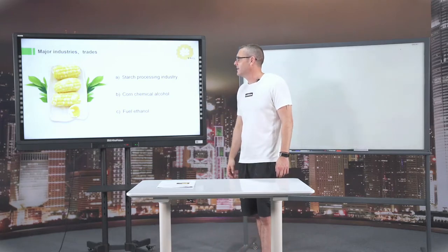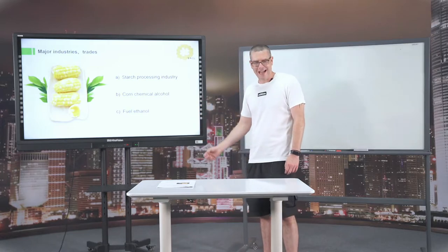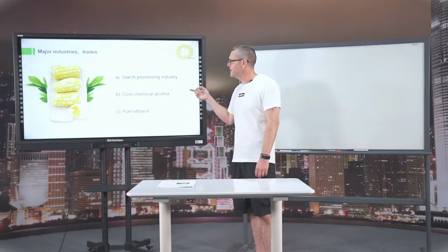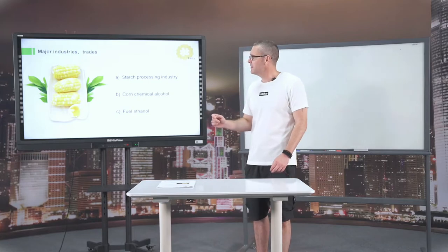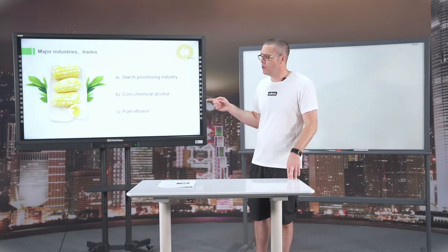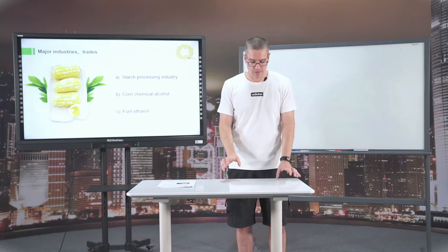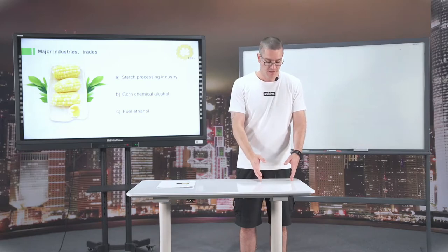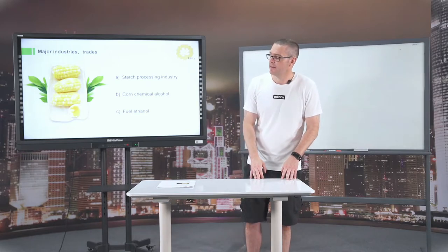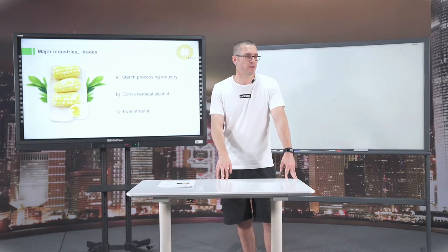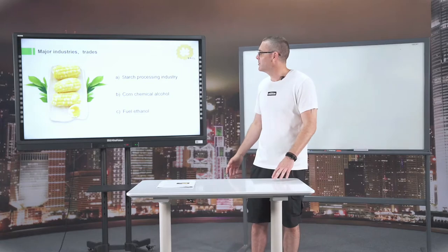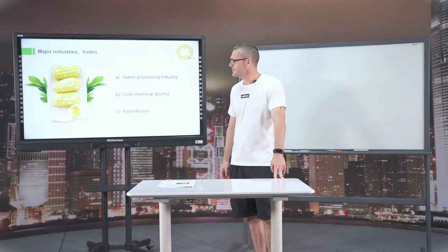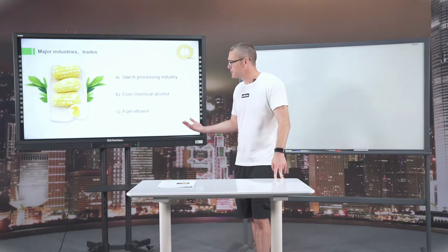Starching process: corn, chemical, alcohol, fuel, ethanol. These are different industries. With alcohol, we break it down into two different parts. Pure alcohol, we cannot drink. Pure alcohol is used in hospitals, cleaning products, because it's so strong and it will kill all the bad things. Fuel ethanol means we can use it for power.